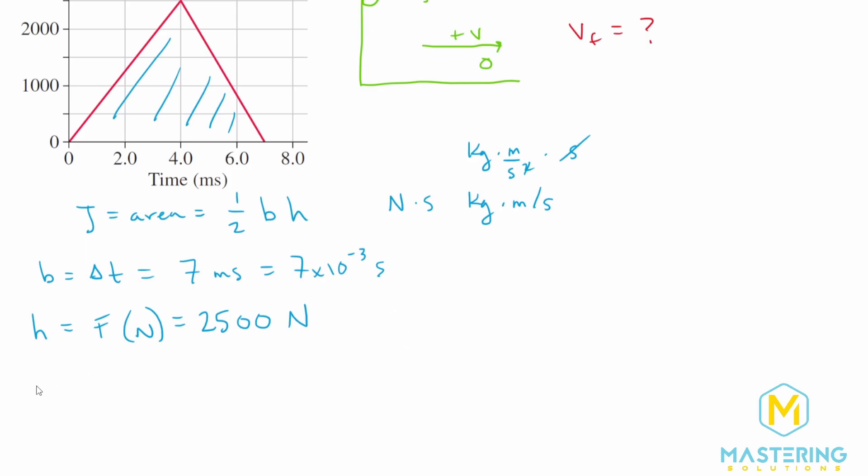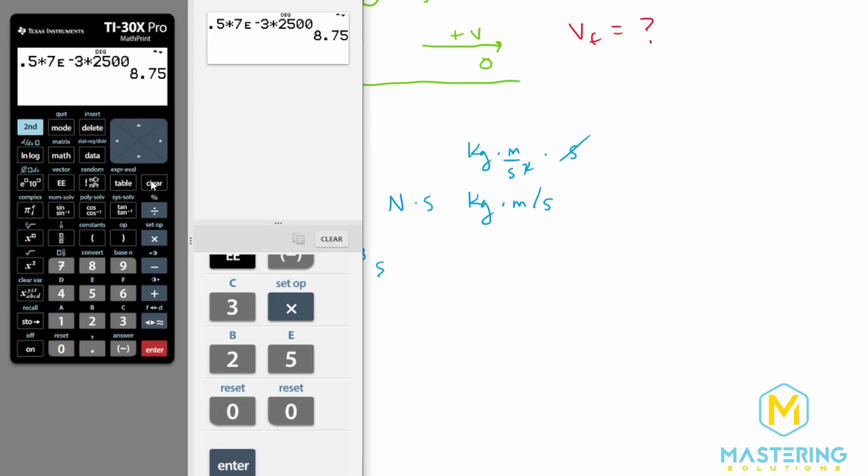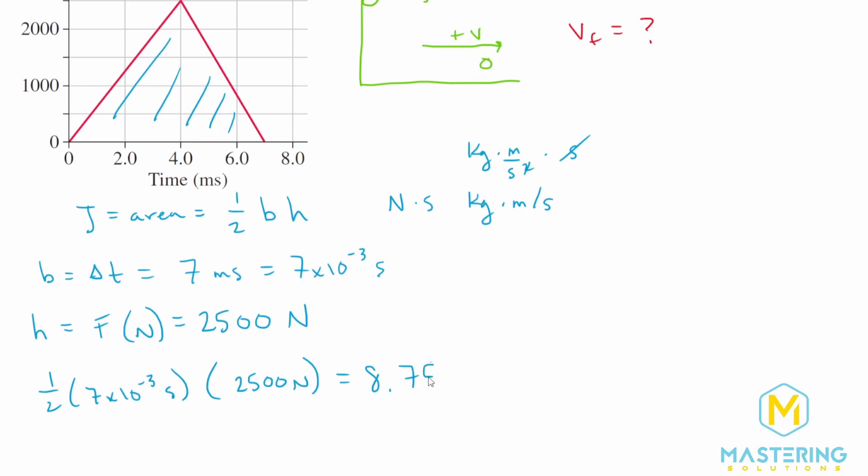So when we calculate this out here, we have one half times seven times 10 to the negative three seconds times 2500 newtons. And that gives us 8.75 newton seconds, or as we just discussed, kilograms times meters per second. So we now have our J.